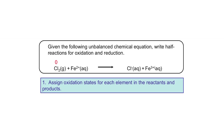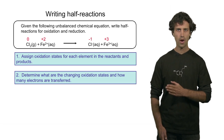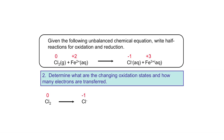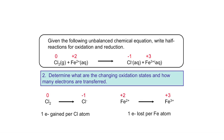The oxidation state of iron 2+ is plus 2. On the product side, we see chlorine ions with an oxidation state of minus 1, and the oxidation state of iron 3+ is plus 3. The next step is to determine where the electrons are being transferred. The chlorine atoms are gaining an electron each, and the iron ion is losing an electron. This means chlorine is being reduced and the iron ion is being oxidized.